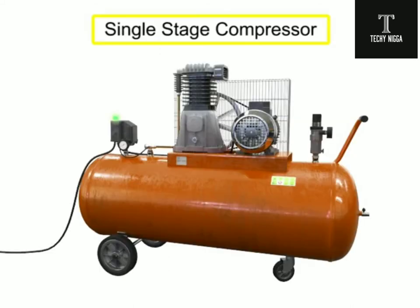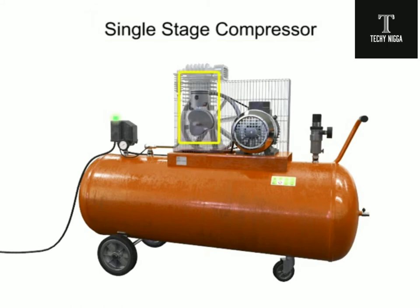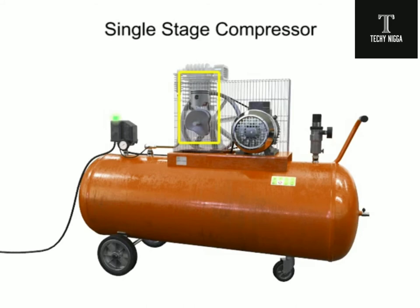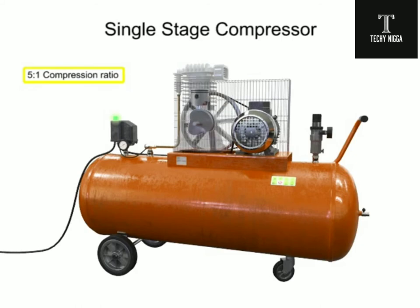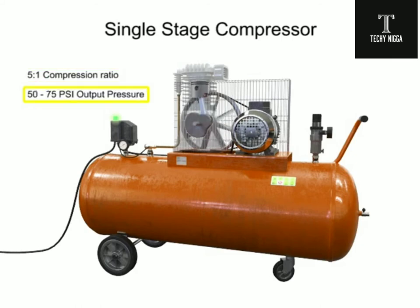This is a single-stage compressor. It has only one piston and cylinder and compresses the air in only one stage. A single-stage compressor typically has a compression ratio of 5 to 1 with an output pressure of about 50 to 75 psi.